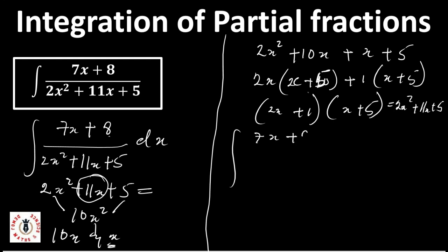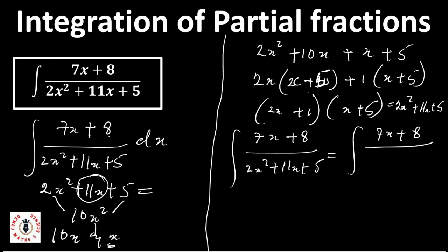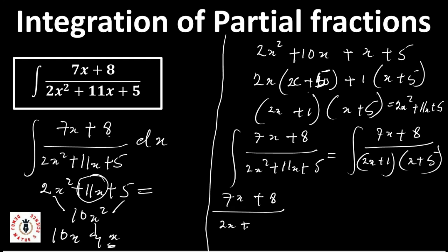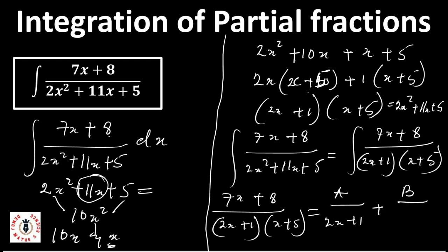So my equation can now be written as the integral of 7x plus 8 over (2x plus 1)(x plus 5). I can now resolve 7x plus 8 over (2x plus 1)(x plus 5) into its basic components: A over (2x plus 1) plus B over (x plus 5).